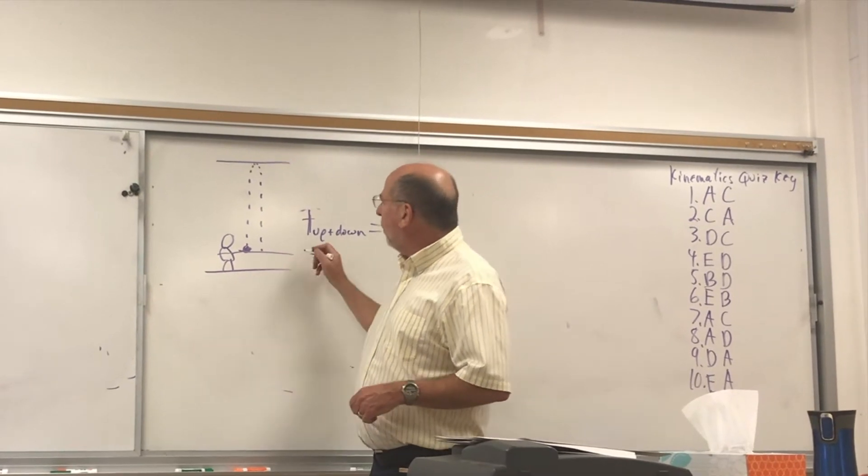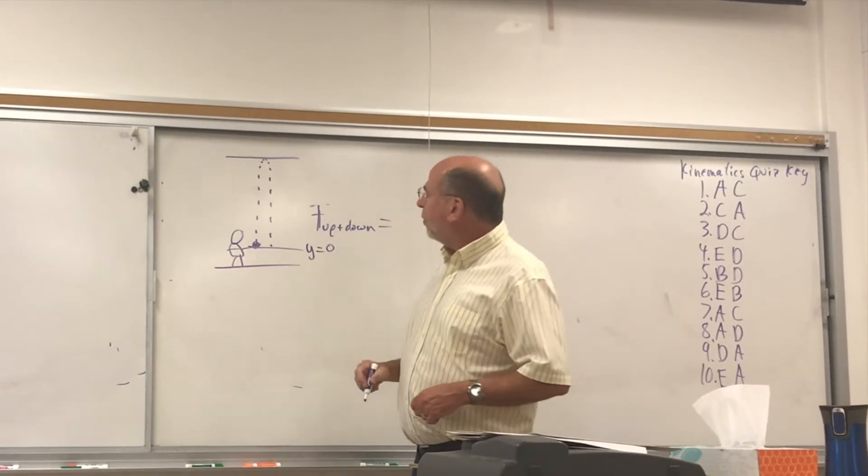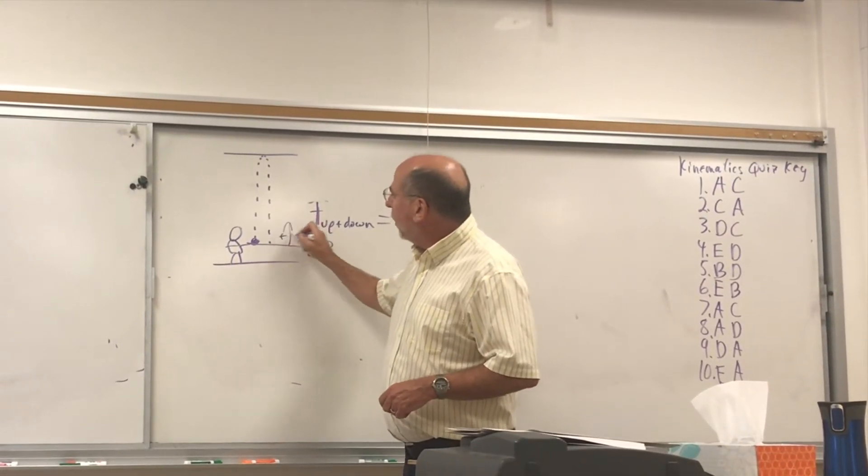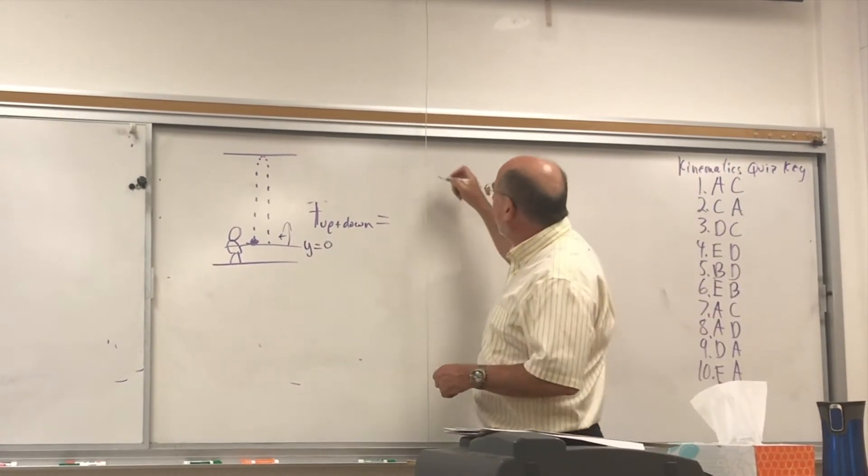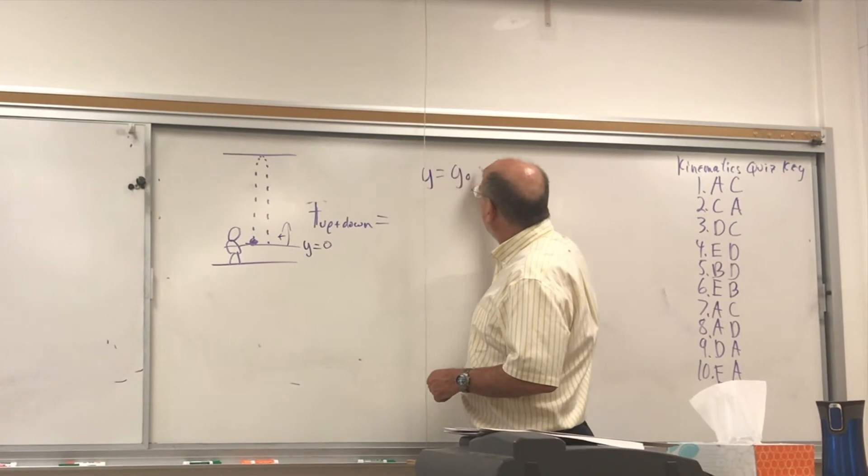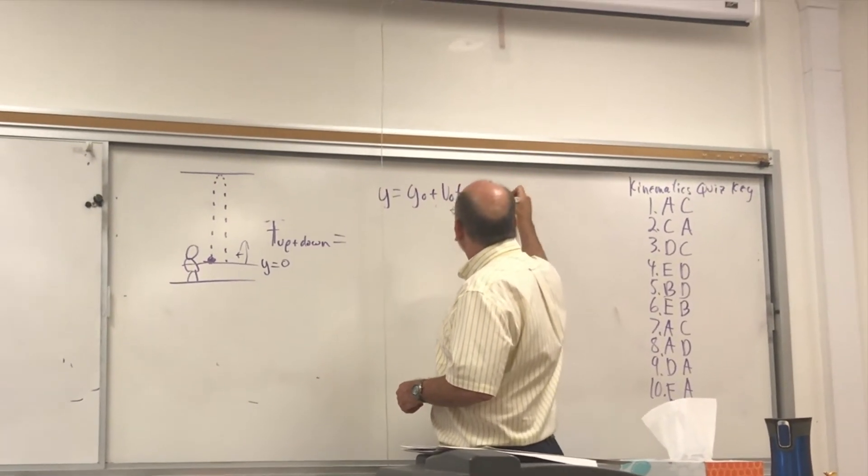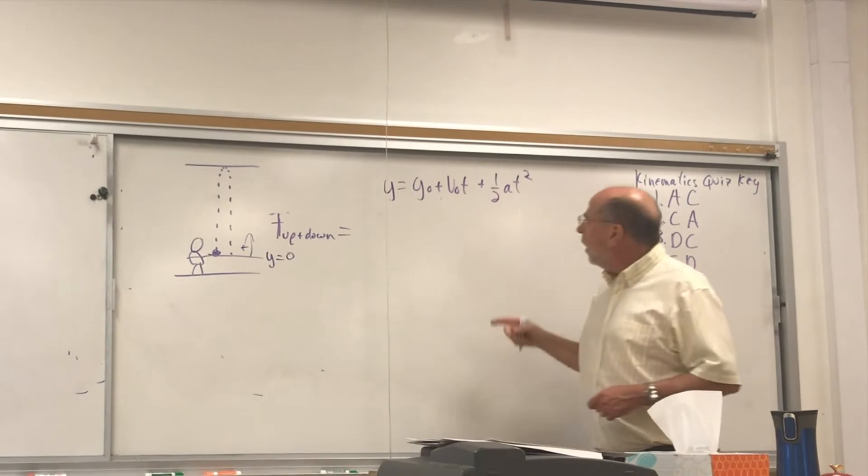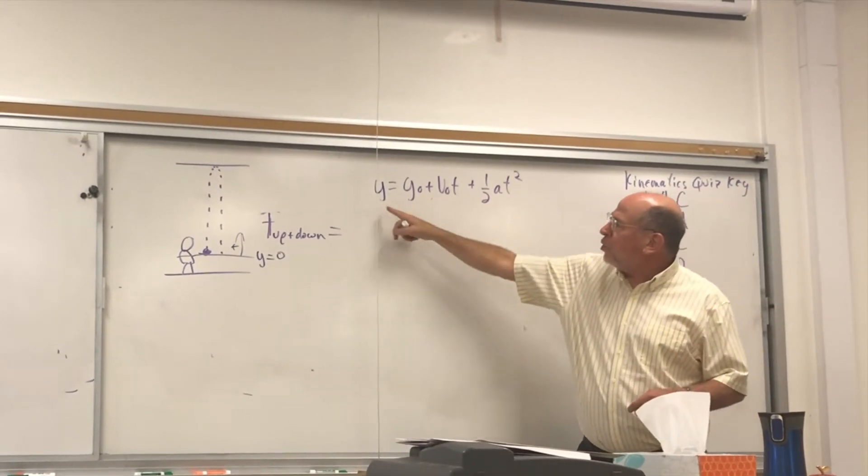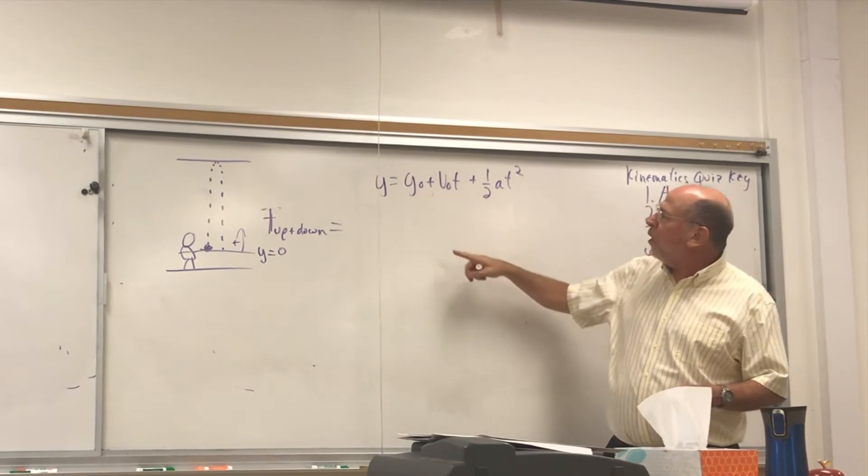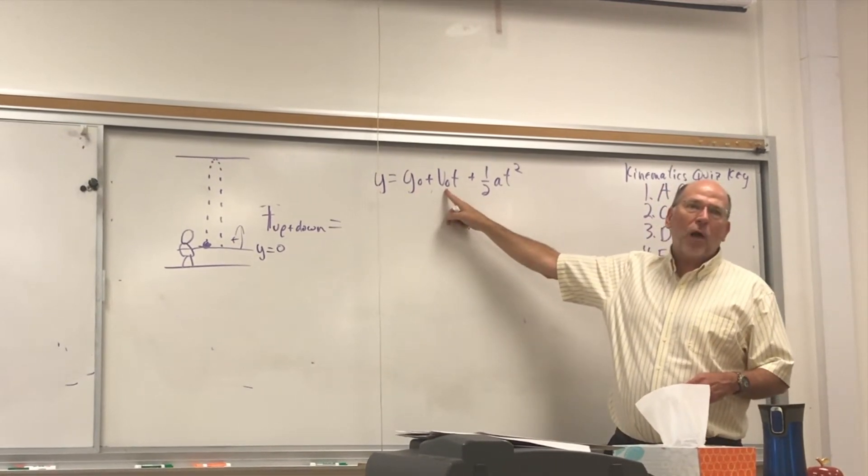You might say, well, I'm going to make the origin where I release it from and I'm going to make up positive. That's pretty much what the book would do. And if you write out the equation for position, we have time. And I want to know position. We set that to zero.